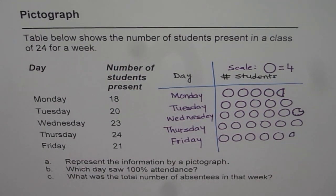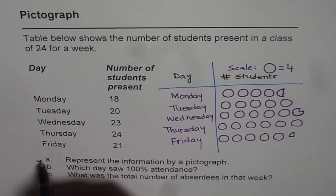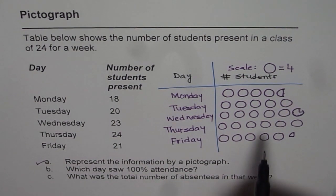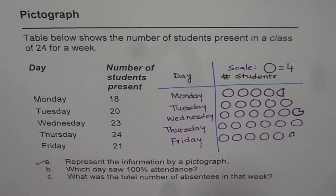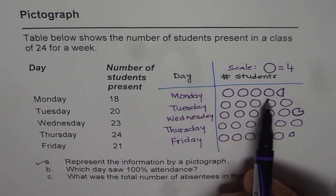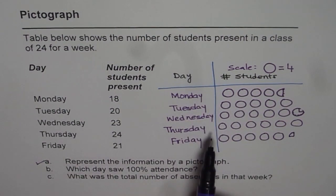Now let us answer the questions. So we have already done the first part which is represent the information by a pictograph. This has pictures in it and every picture represents 4 students. So we can count and verify that this really represents the data given to us.